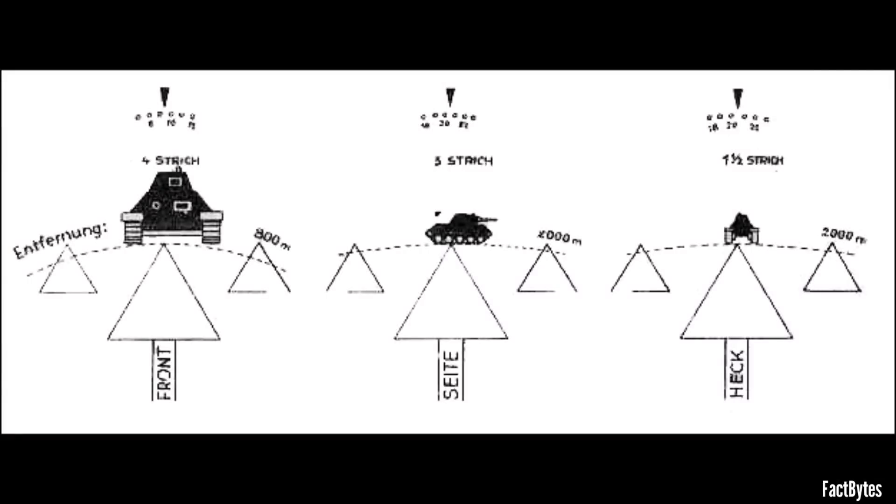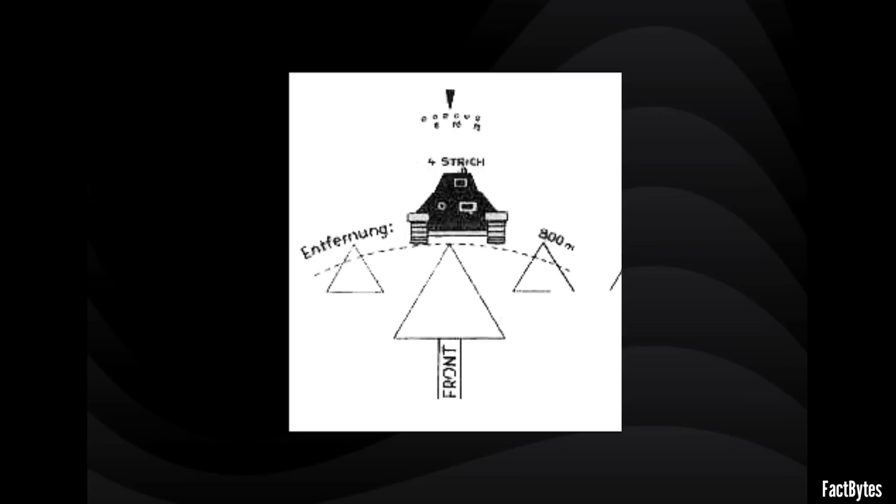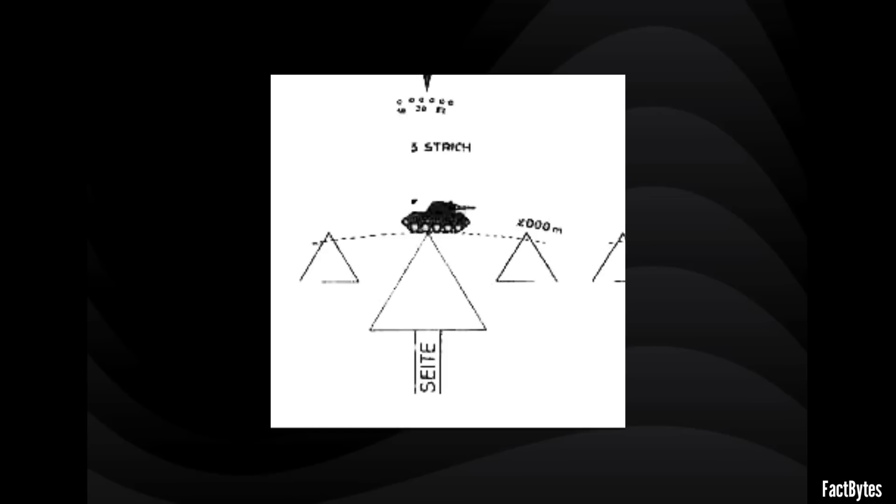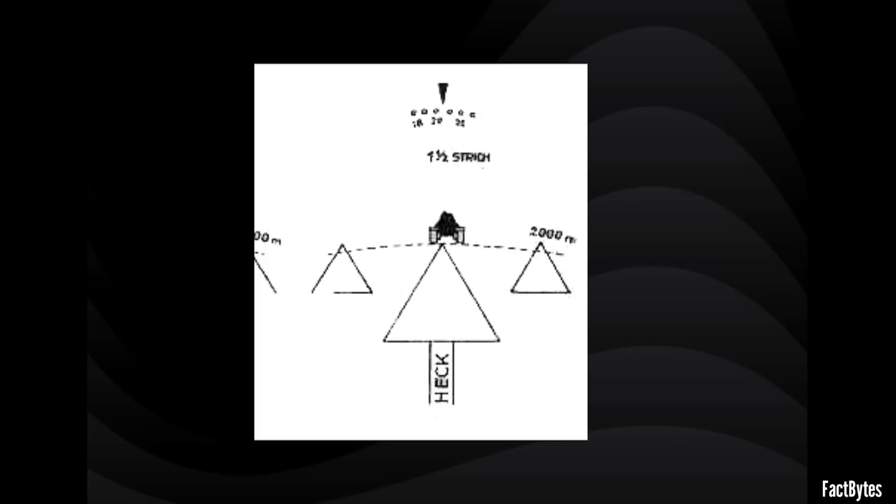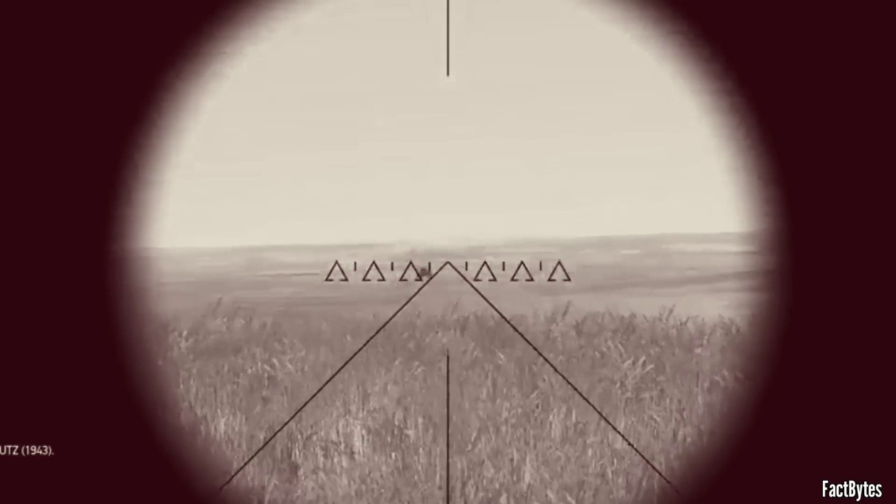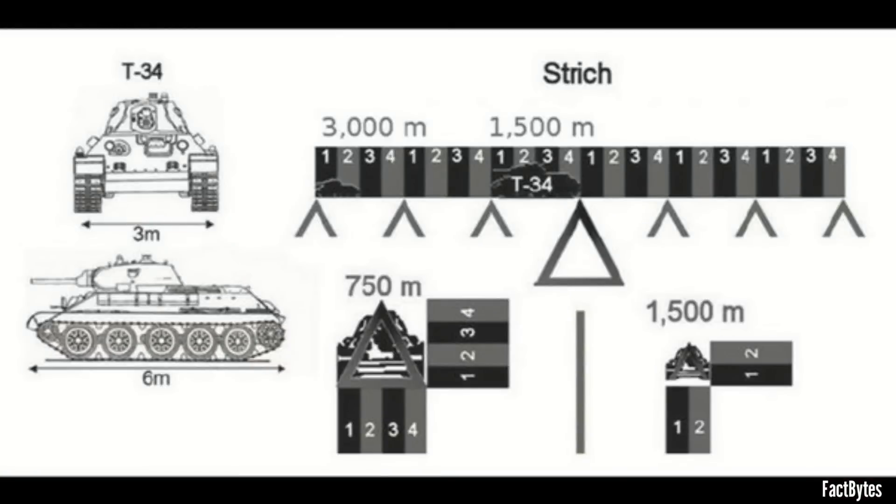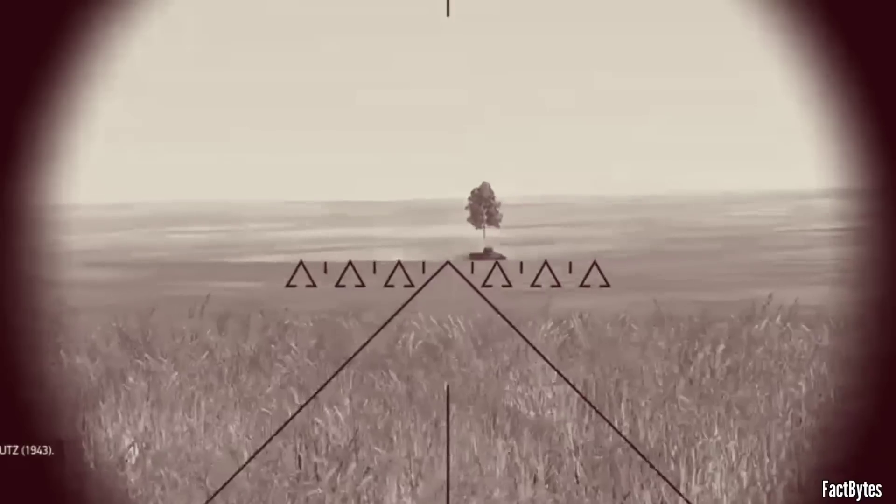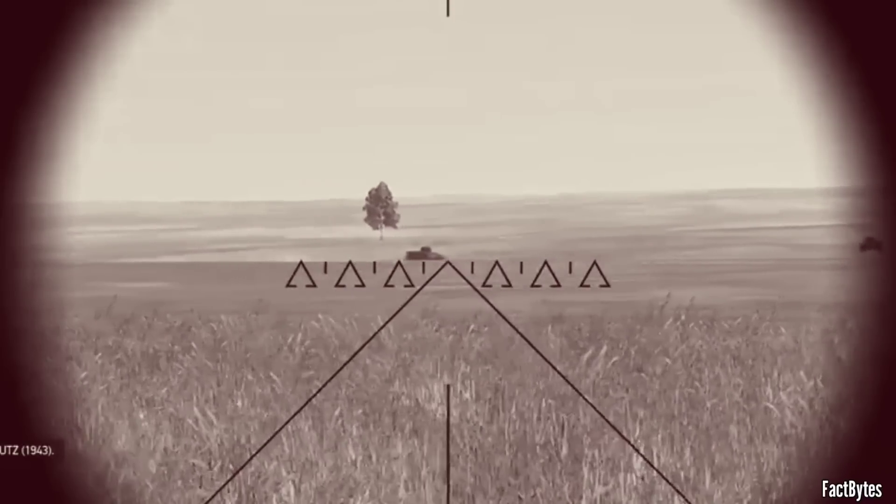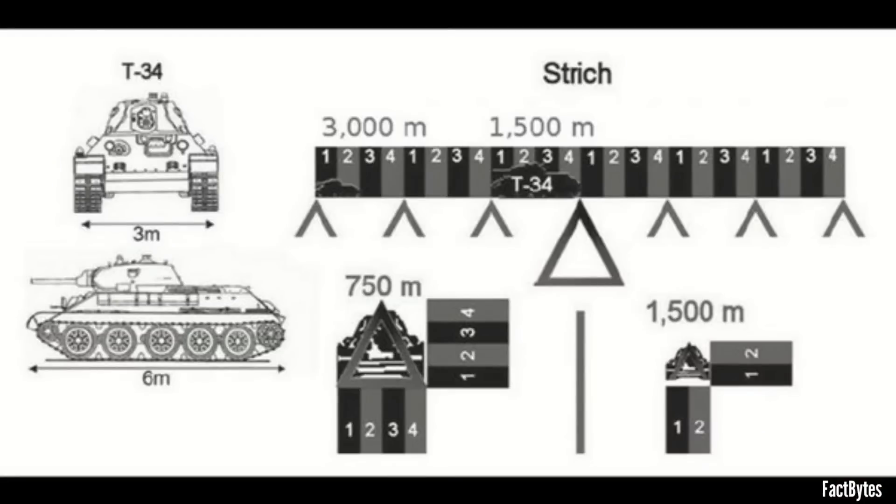These are head-on, sideways, and diagonal views. Depending on the view of the enemy tank, the corresponding dimension from the range table had to be used to determine the range. Width was used for the head-on view, length was used for the sideways view, and height was used for the diagonal view. In the head-on view, when the T-34 measured four mils in the gun sight, it corresponded to a range of 750 meters. However, in the sideways view, the same length of four mils translated to a longer range of 1,500 meters.